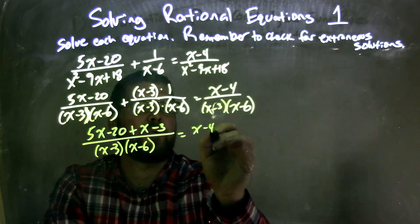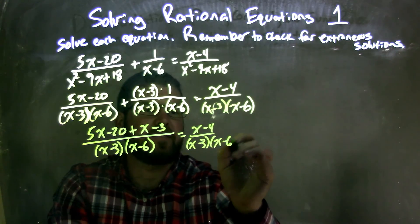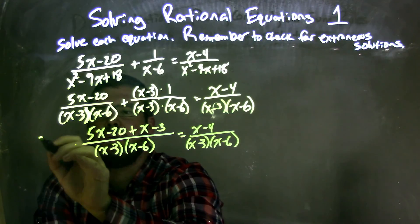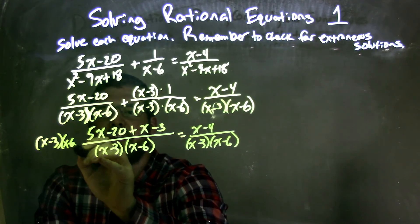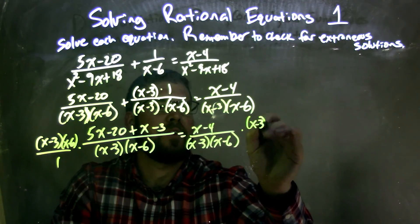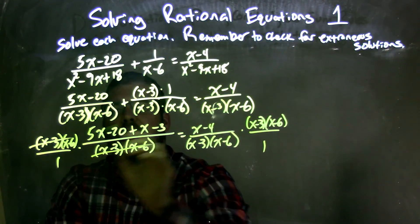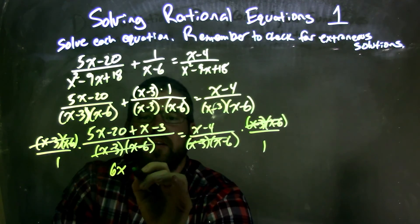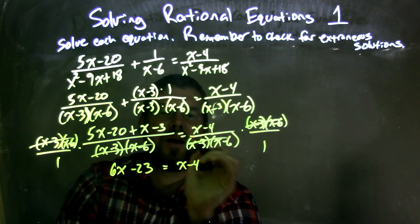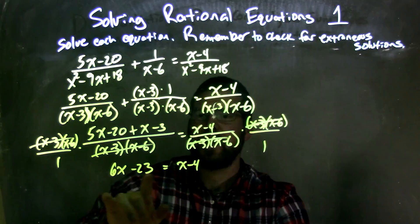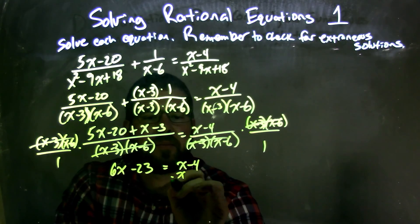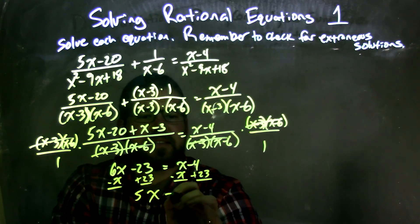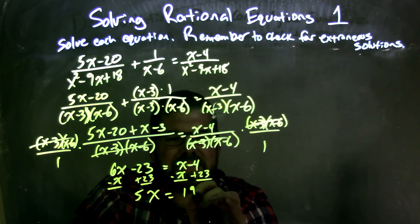It's getting crazy here, but now I can multiply both sides by the denominator x minus 3 times x minus 6, which eliminates the denominators entirely. That leaves me with 5x plus x equals 6x in the numerator, and negative 20 minus 3 is minus 23, equals x minus 4. Much simpler problem now. So I subtract x from both sides and add 23 to both sides, giving me 5x equals negative 4 plus 23, which is 19. Then divide by 5.